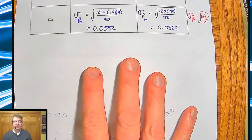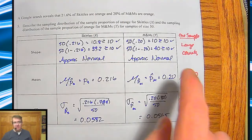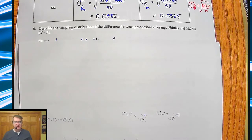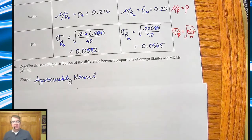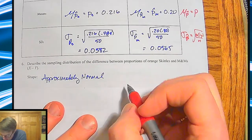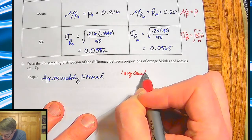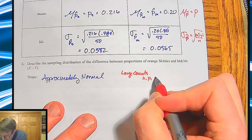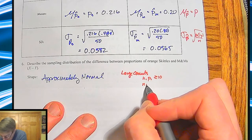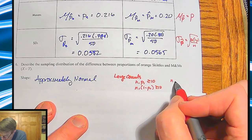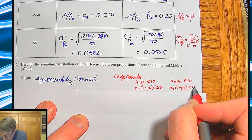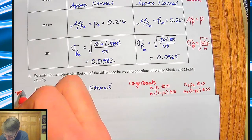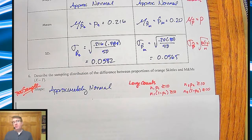The question now becomes: how do we take this from one sample and start looking at the difference between two samples? If we're going to describe the sampling distribution of the difference between the two distributions, it's approximately normal — because subtracting two normal populations, their difference will also be normal. We check large counts for each sample individually. One sample versus two samples is a big distinction moving forward in this course.